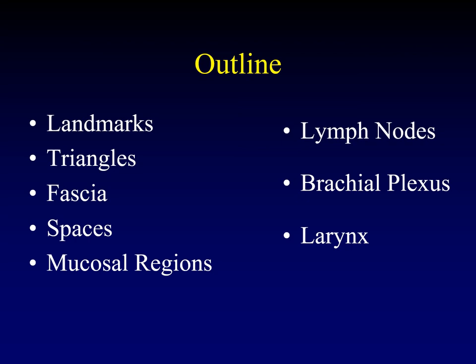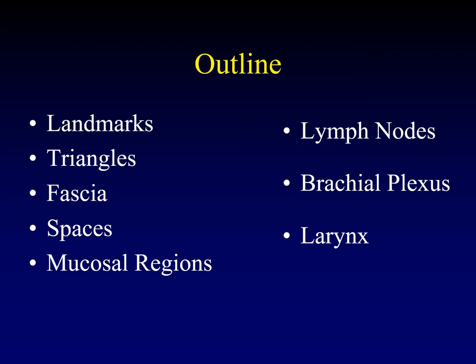The bulk of this lecture is going to be a discussion of lymph nodes — how we tell they're benign, how we tell they're malignant, how we categorize them, and how we describe their very predictable locations. We'll spend a little bit of time at the end talking about the anatomy of the brachial plexus and the anatomy of the larynx, although the pathology for those will be covered in different lectures.